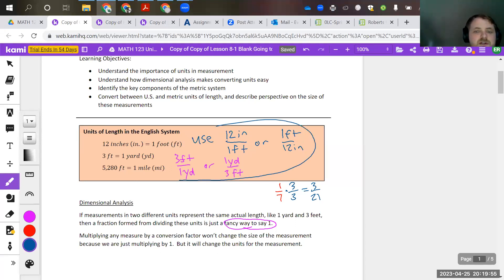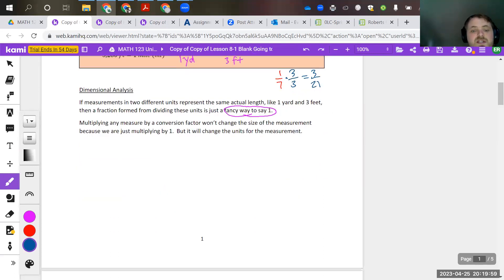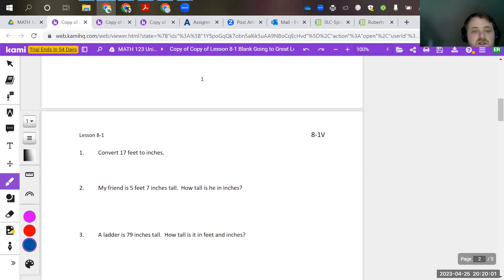But again, this purple and blue up here is pretty important. That's essentially what we're going to do to convert between different measurements. So if I have 17 feet to start, I'm probably going to use the fact that 12 inches is equal to one foot. But the hard part comes into play of what do I do, what goes on the bottom, what goes on top.